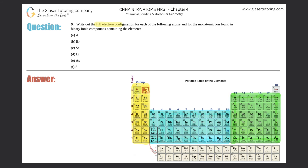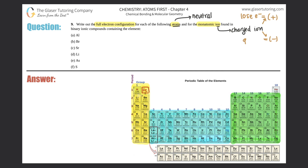Number nine: write out the full electron configuration for each of the following atoms and for the monatomic ion found in binary ionic compounds containing the element. We have six elements, a through f. We have to write the electron configuration for the atom — which means the neutral element, since atoms are always neutral — as opposed to ions, which are charged: positive if they lost electrons, negative if they gained electrons.